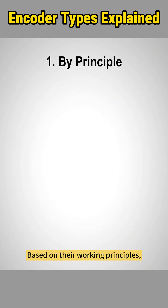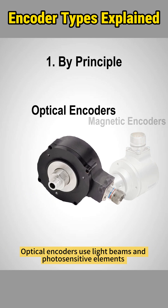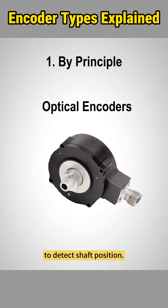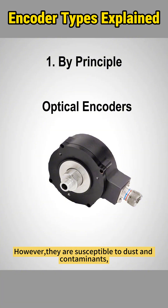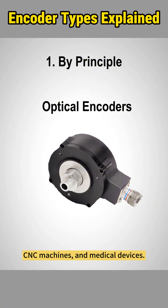Based on their working principles, encoders can be divided into optical encoders and magnetic encoders. Optical encoders use light beams and photosensitive elements to detect shaft position. They offer high resolution and precision. However, they are susceptible to dust and contaminants, requiring clean environments for reliable performance. They are commonly used in industrial automation control systems, CNC machines, and medical devices.